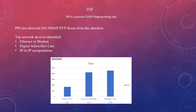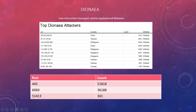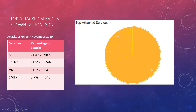The p0f fingerprinting tool detected 264 Nmap scans, identifying the top three devices and top three operating systems. In Dionaea, we captured different top malware samples and also identified the top countries attacking the honeypot and the top ports being attacked. HoneyDB data gathered shows which services have been attacked and the count for each as of that date.